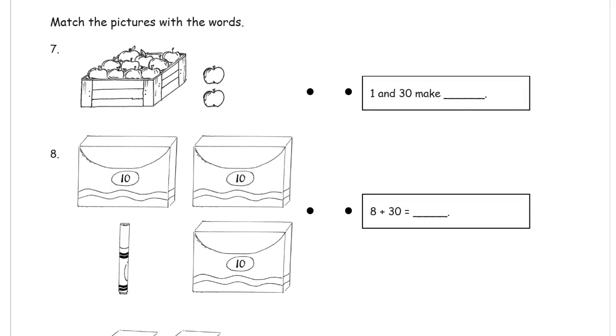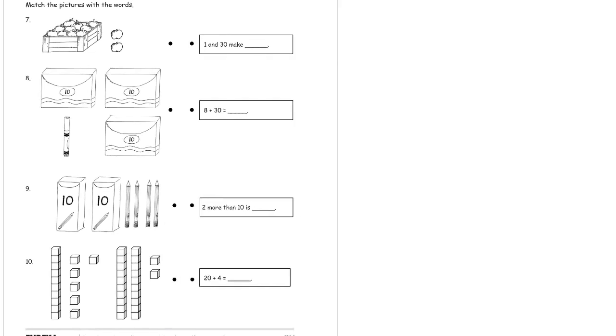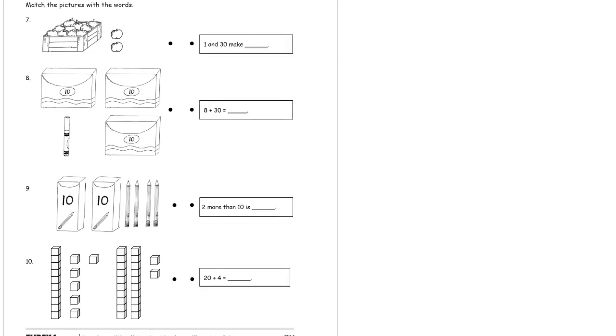Match the pictures with the words. And here we have one and thirty. Now, this here is not one and thirty, obviously. It's the group of ten, and then, so it's ten and two. So, what I have to do for this is zoom out because this is a big match for the whole page. So, what we can do is look at what this is. It might be easier to look at the picture here, or to look at the statement.